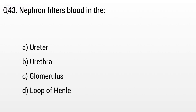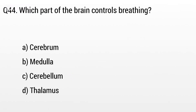Question 43. Nephron filters blood in the: Option A: Ureter, B: Urethra, C: Glomerulus, D: Loop of Henle. The right answer is option C, Glomerulus.